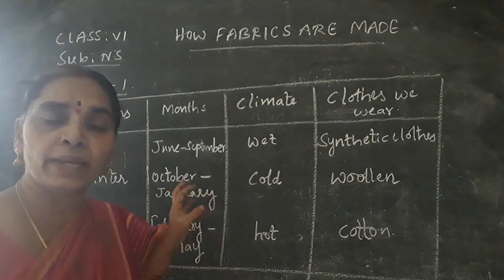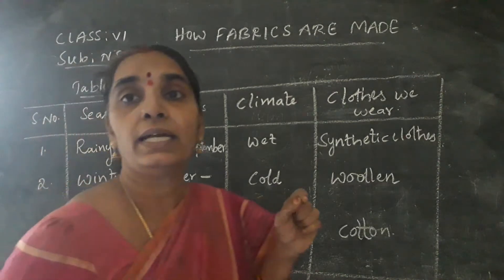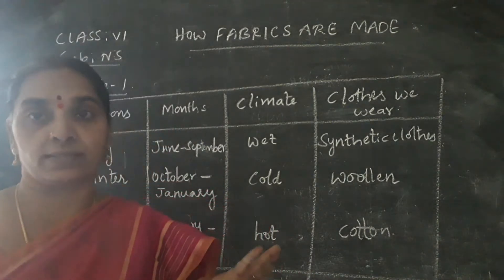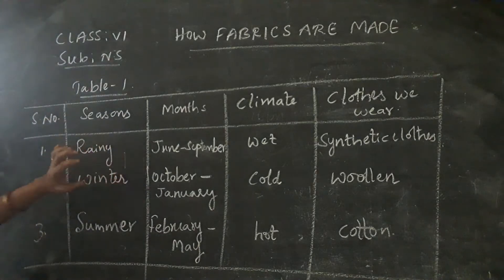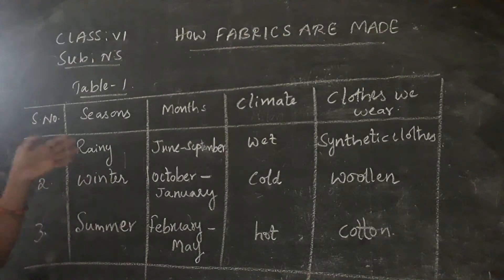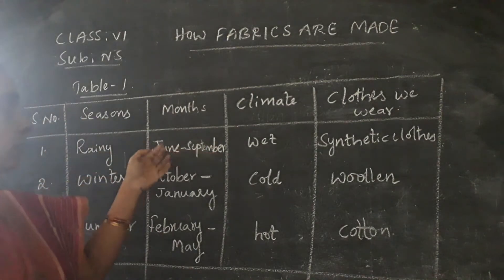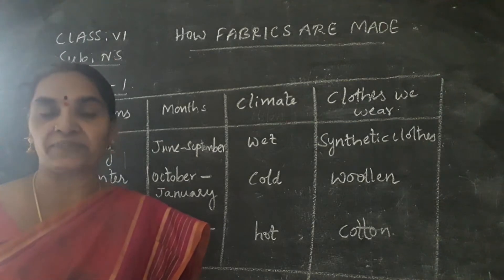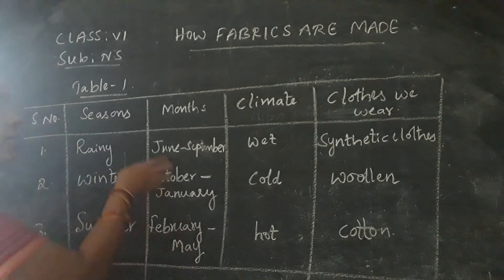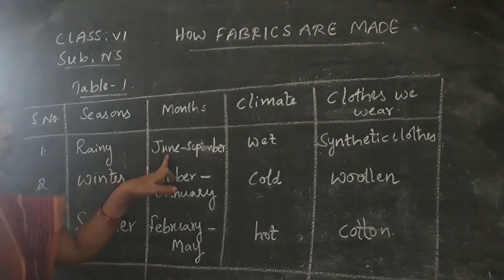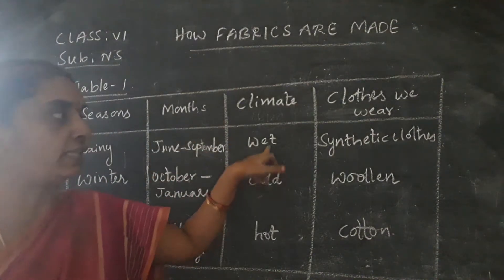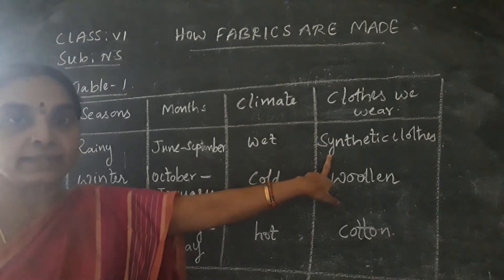In general, the three seasons can be compared as summer, winter, and rainy season. The rainy season falls between June to September, though due to unseasonal rains we cannot always expect the seasons perfectly. We experience the rainy season in India, the climate is wet, and we wear synthetic clothes during this season.